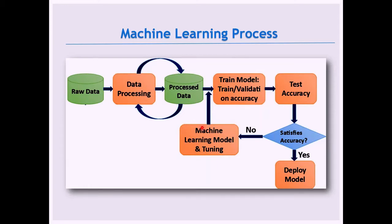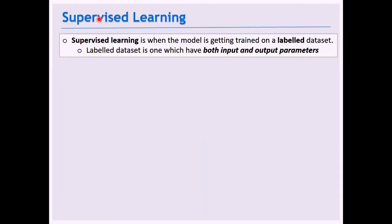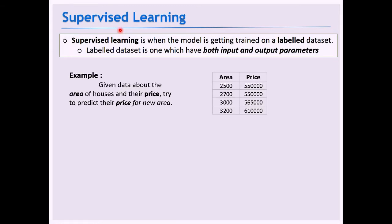In supervised learning, there is a labeled dataset with both input and output features. For example, given the area of a house as input, we predict the price as output. There can be many input features, but here we use area as the single feature to predict price.